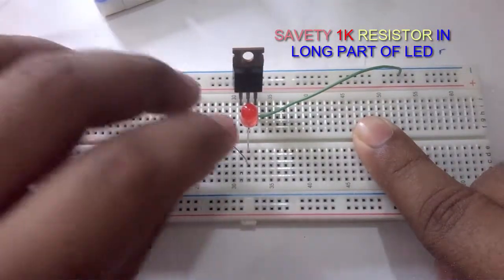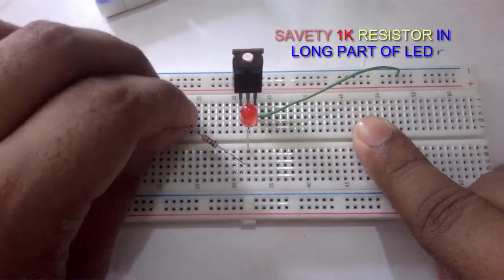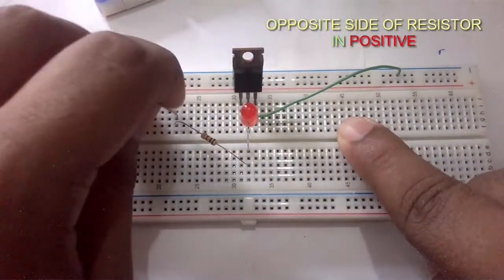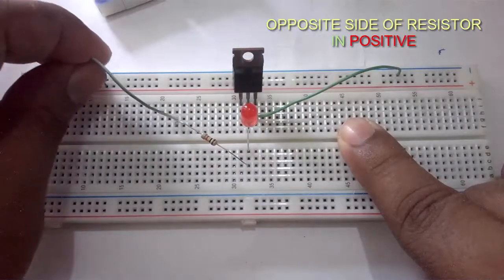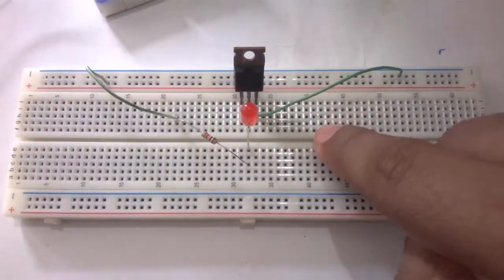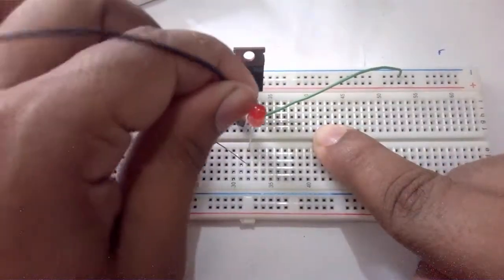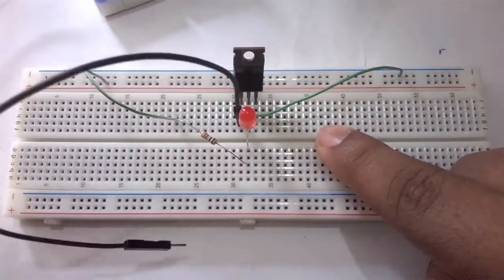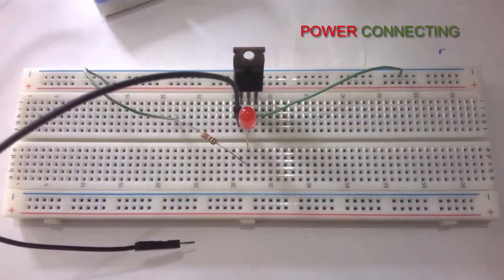The opposite side of the resistor goes to the positive side of the breadboard. A wire is connecting in the gate pin and it is used as a switch.